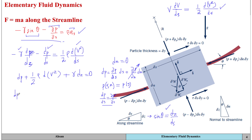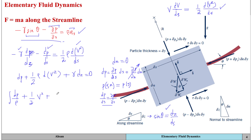We can simplify this equation further by dividing throughout by density, giving dp/ρ plus one-half times v-squared. Taking the integral throughout: the integral of dp/ρ plus one-half v-squared, plus g times z equals a constant along the streamline.